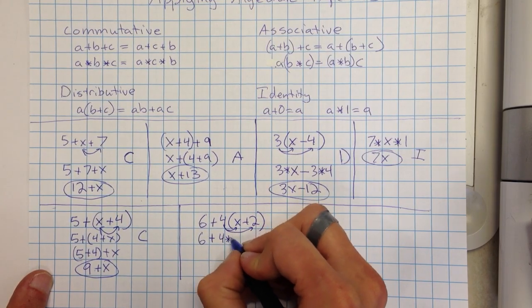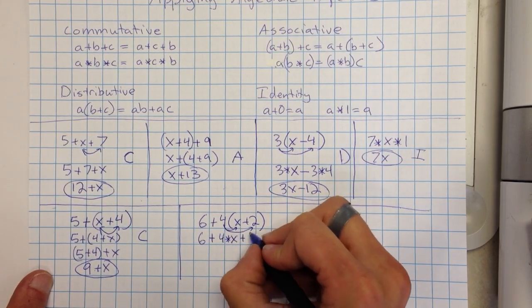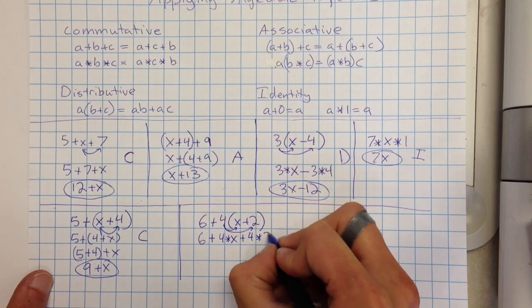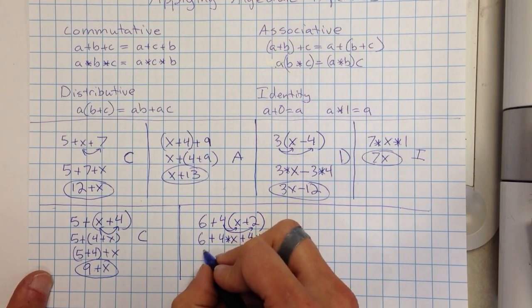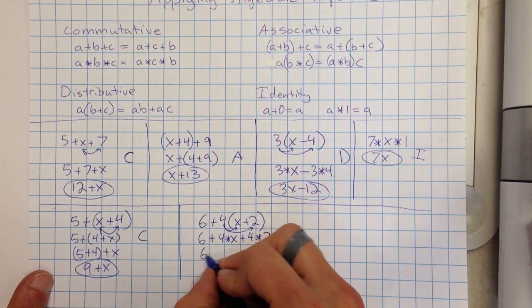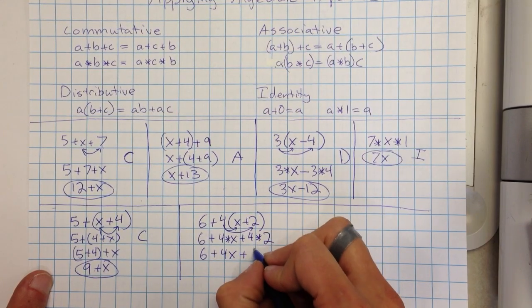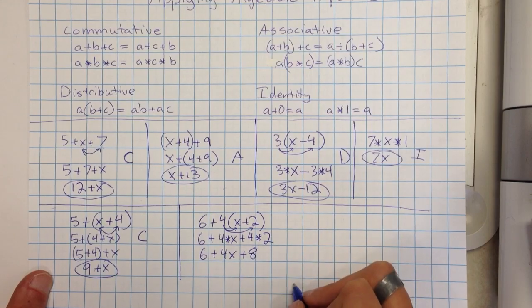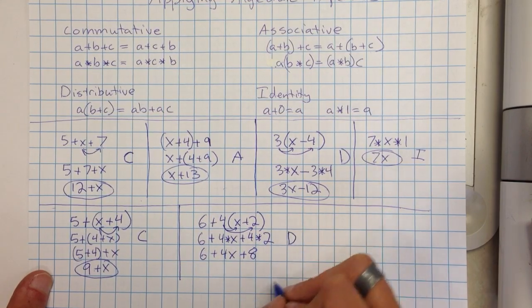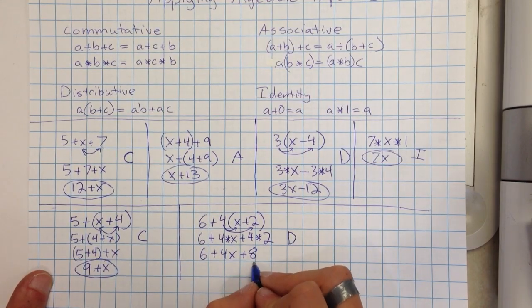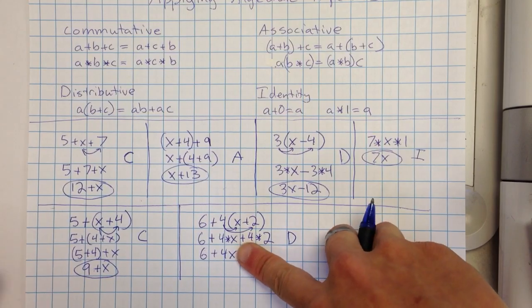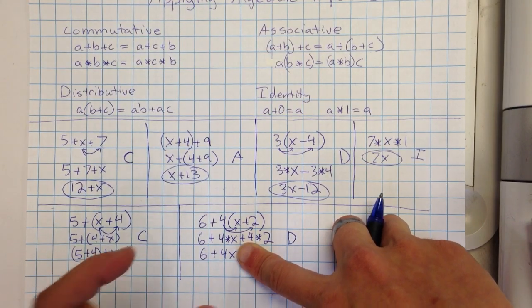So we could say 4 times X plus 4 times 2. So then that would give us 6 plus 4X plus, and I can do this multiplication now, 8. All right, so this was distributive right here. So now I have 6 plus 4X plus 8. Now I can't add the 6 and the 4X because I don't know what X equals. So the X is always going to end up staying kind of by itself.